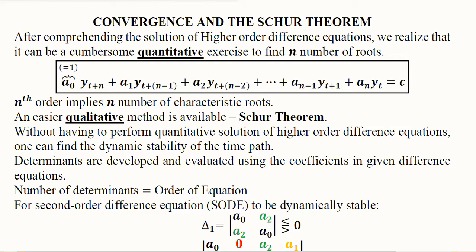If one of them indicates dynamic instability and the other indicates dynamic stability, then there arises a conflict between the two set of roots.